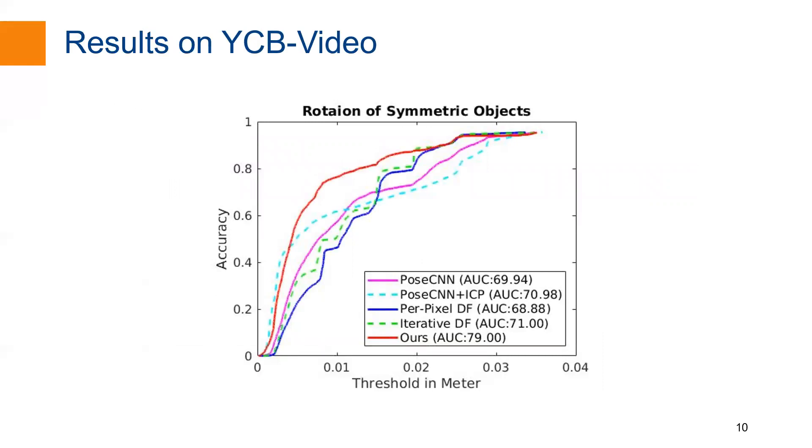Our main argument is that our rotation regression strategy could alleviate the local optimum problem of ShapeMatch loss. To validate this argument, we evaluate whether our approach could have a better performance on the symmetric objects of YCB-Video dataset. As can be seen in the figure, our method performs better than PoseCNN and DenseFusion, with or without refinement.